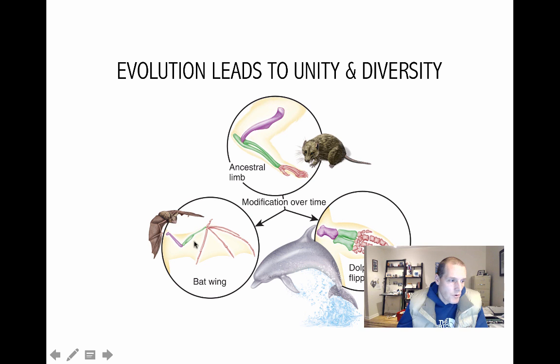So, the structures in purple here are also seen in the bat wing and in the dolphin flipper. And in green, that structure is preserved in the bat wing and the dolphin flipper. And so, over time, although there have been changes, there have been modifications, we're seeing some unity. We're seeing the same or similar structures being used in similar ways, but in different forms. And so, what we get is we get a huge diversity of forms of life on the planet.